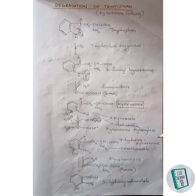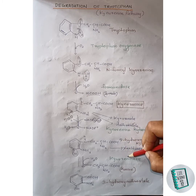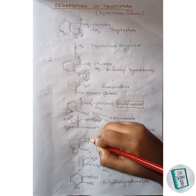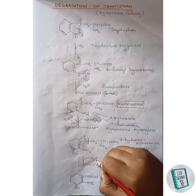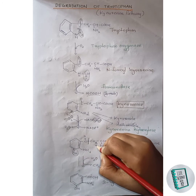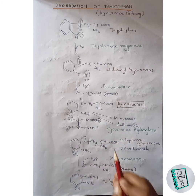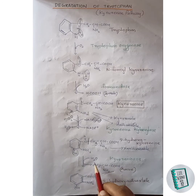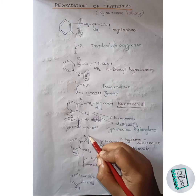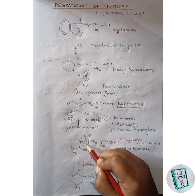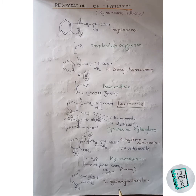3-hydroxykynurenine can give rise to xanthocanate through another pathway, but here it is converted to 3-hydroxyanthranilate. Alanine is released: in the presence of water, this bond breaks, and one hydrogen of the water molecule attaches to the CH2 to form CH3, which is released as alanine. The remaining OH group of the water molecule attaches to this carbon forming a COOH group. Thus 3-hydroxyanthranilate is formed.